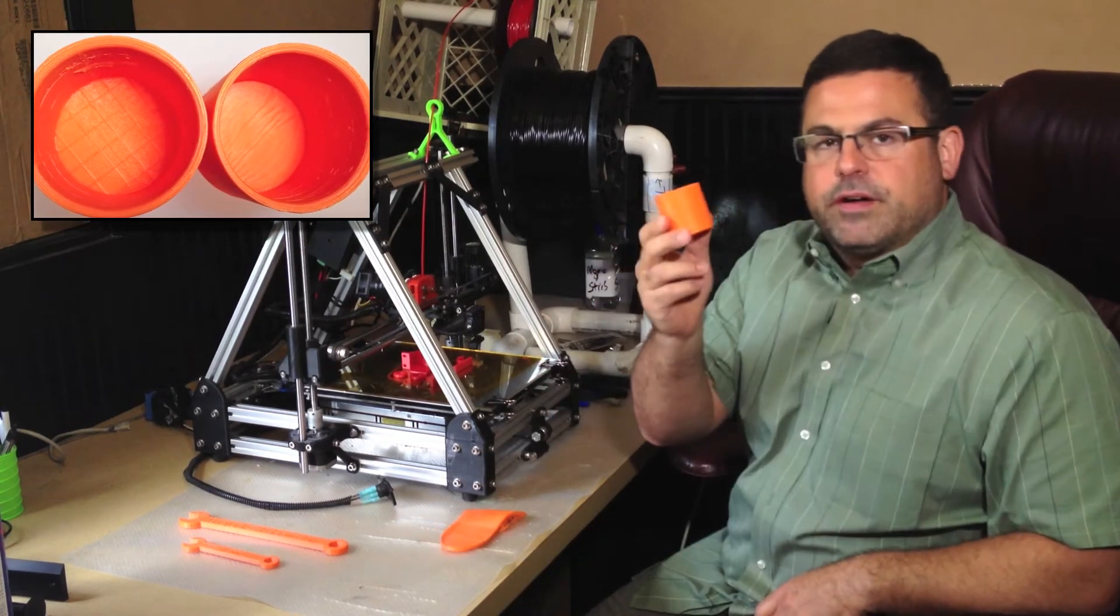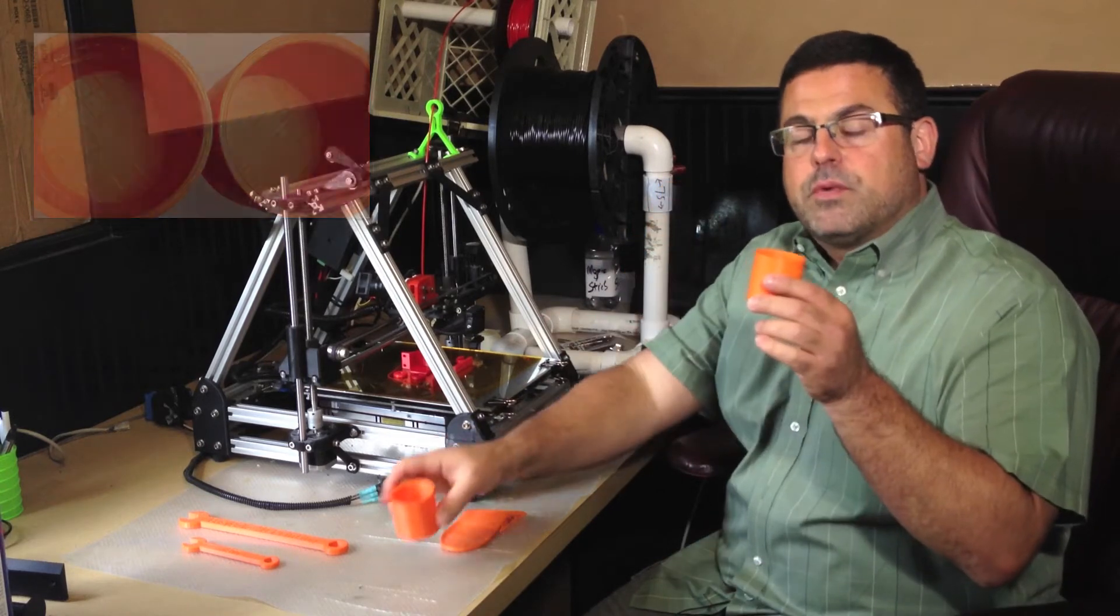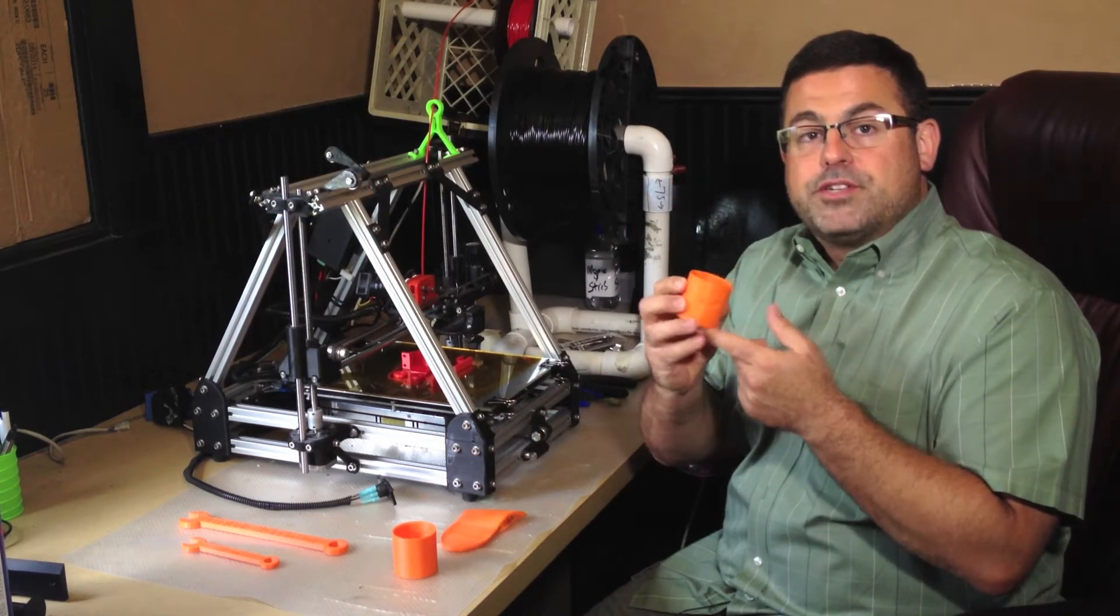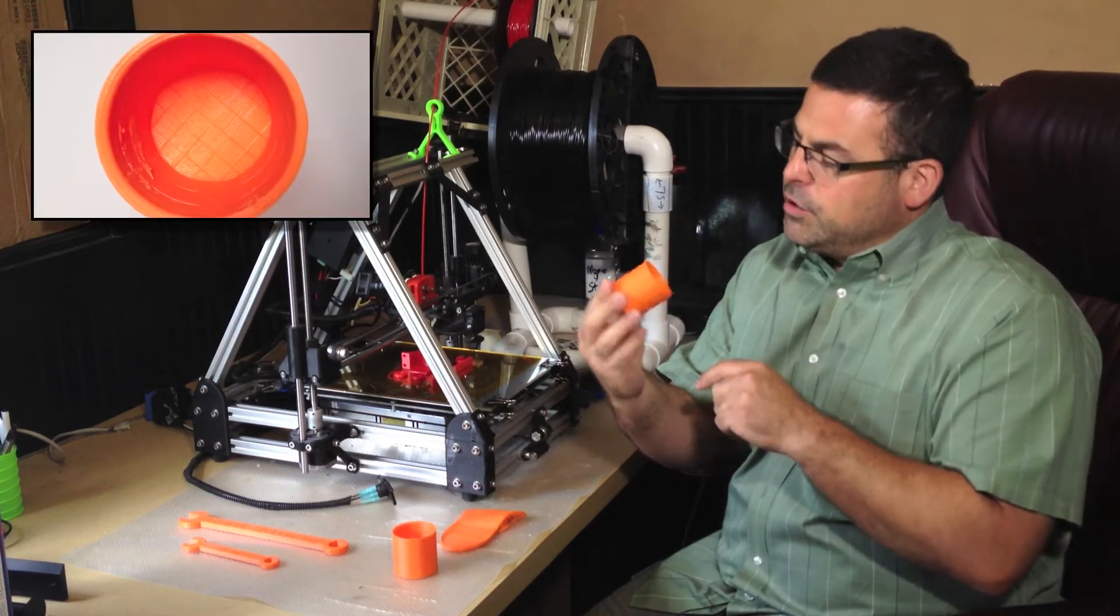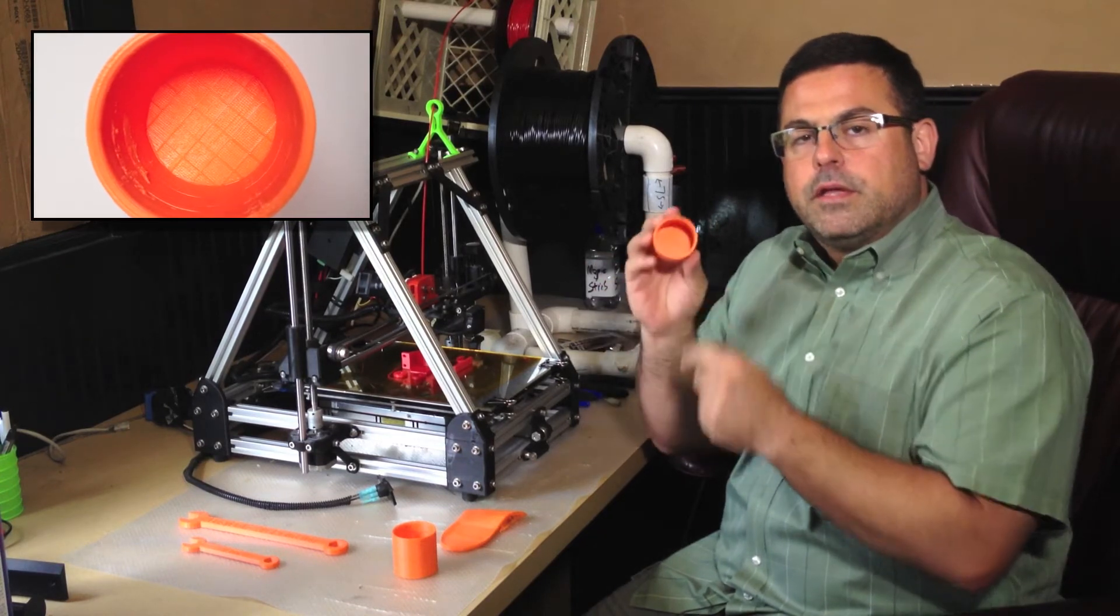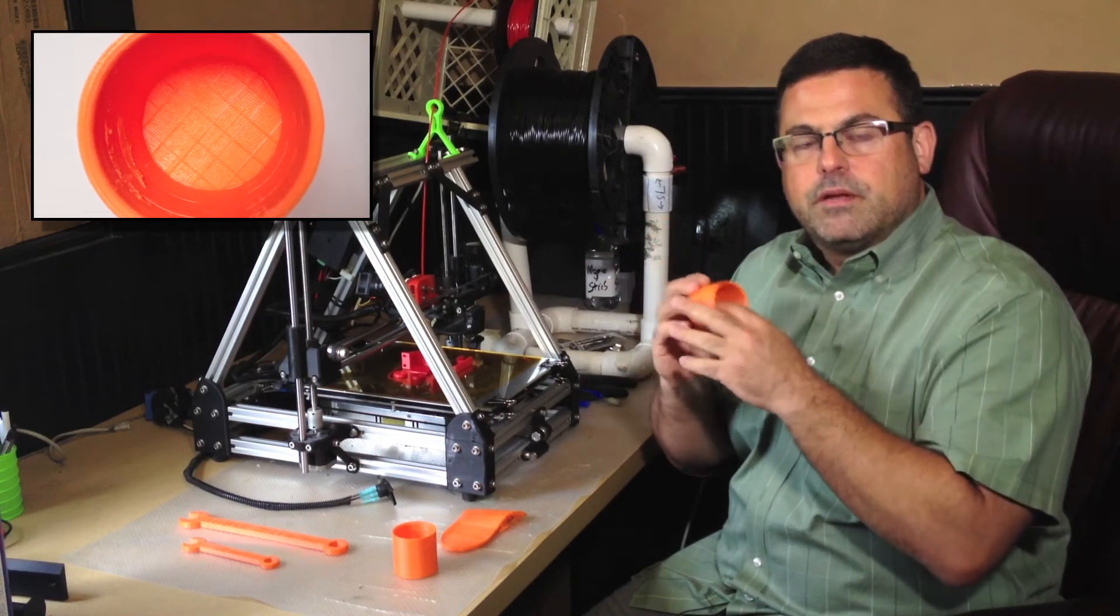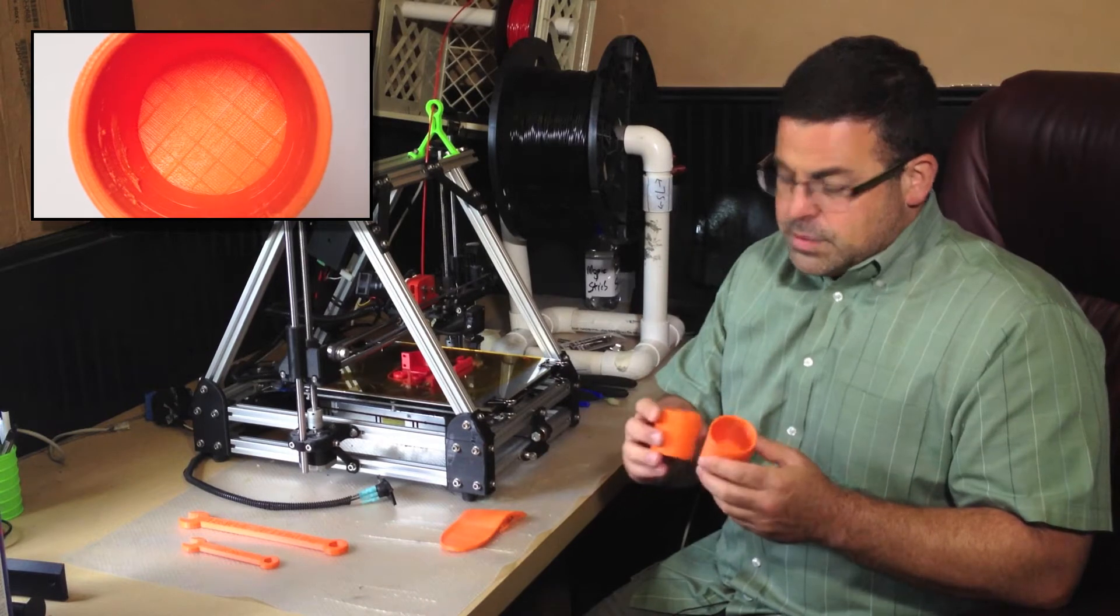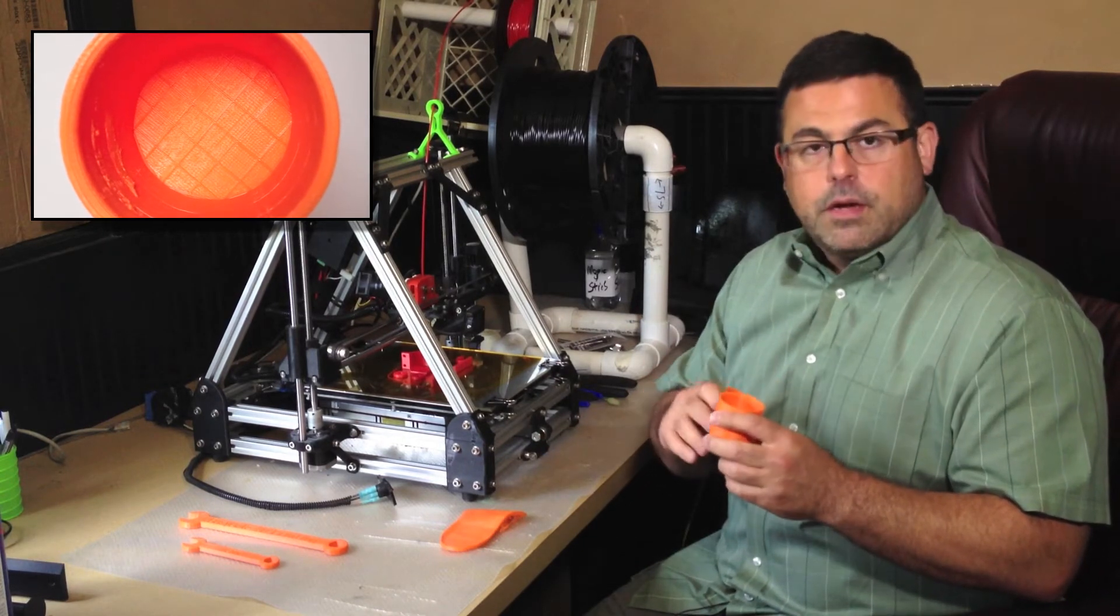In this one I specified three top and bottom, but in this one I have three on the bottom and zero on top. When you look in here you can actually see the infill. There's nothing on top of the infill. Sometimes you might want that, but generally you want to cover up the infill.